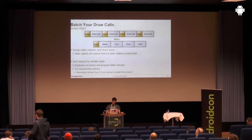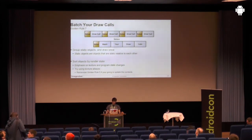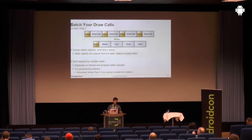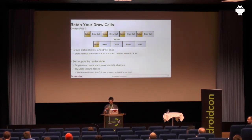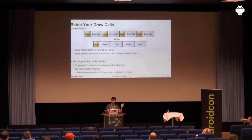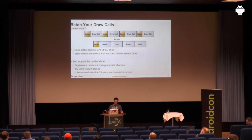Golden rule number seven: change the render state as few times as possible. Every time you make a GL call, you're changing the render state — change it as little as possible. The fewer GL calls, the better. Batch your draw calls. If you're updating a texture a hundred times in a frame but only make one draw call, it will get optimized by the driver because we are the deferred renderer — we'll get all the GL commands, all the texture updates, and only update once. If you put many draw calls in between, it may not get optimized even if there's no EGL swap buffer in between. Fewer render state changes is better for all architectures.